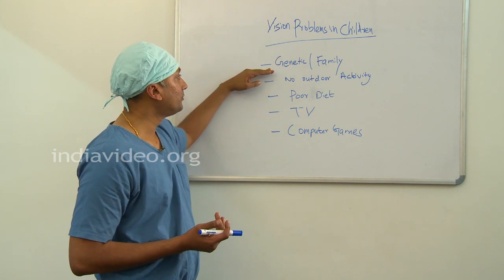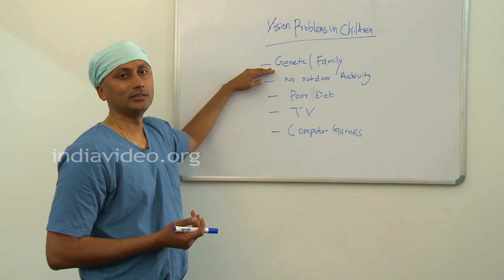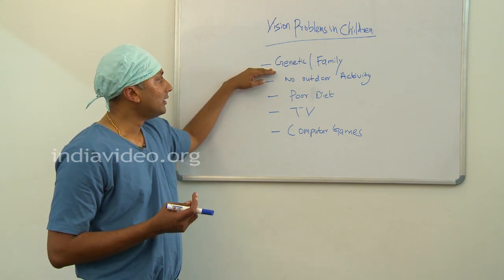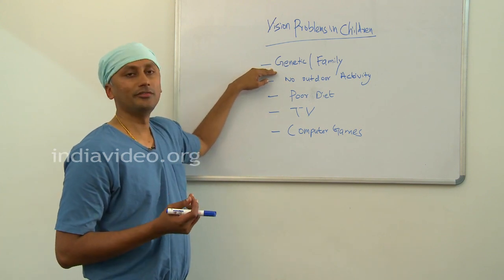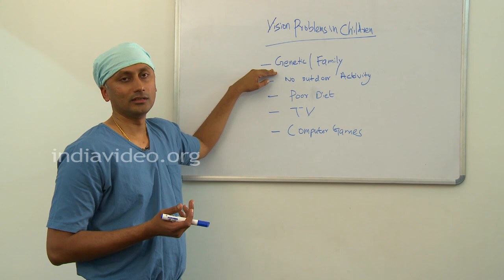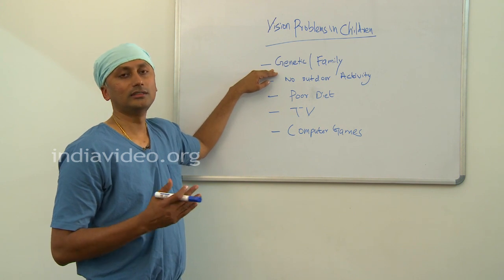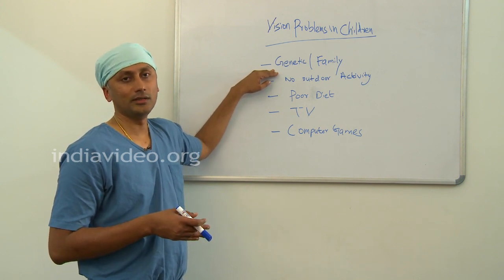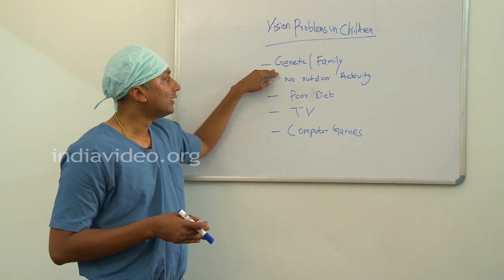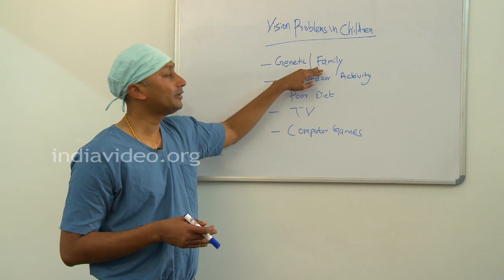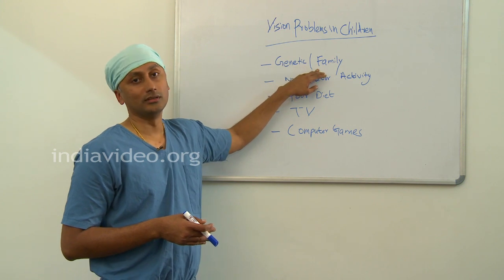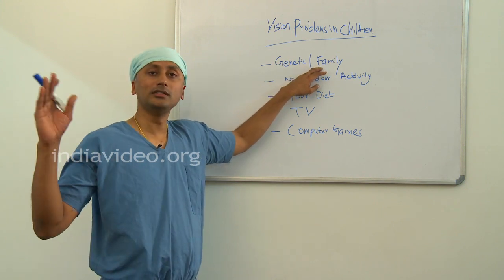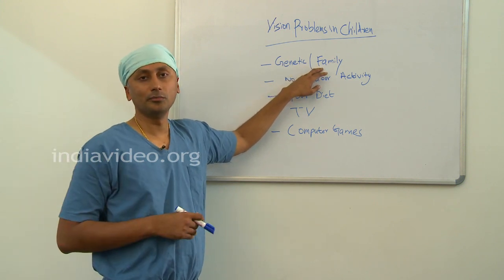The first and most important factor is genetic. If there is anybody in the family with short sight, long sight, etc., there are high chances that the child will get the same condition. And it need not be the father or the mother — it can be as far as three generations behind.